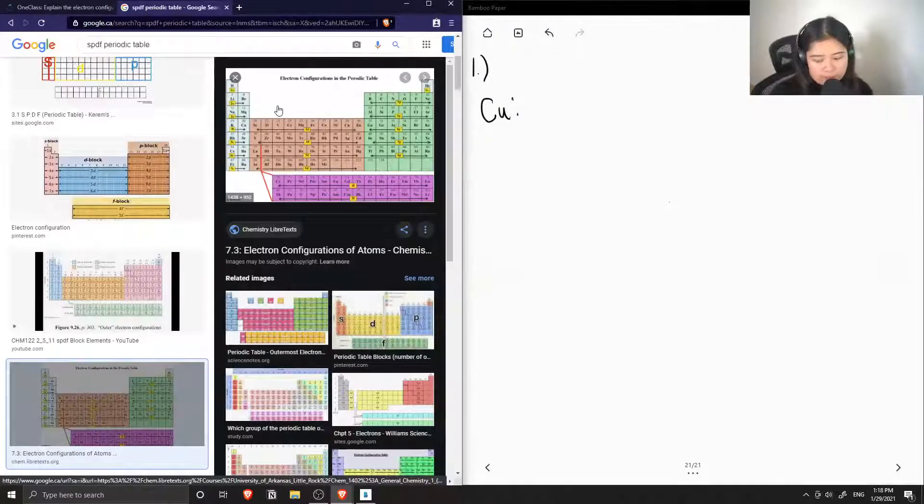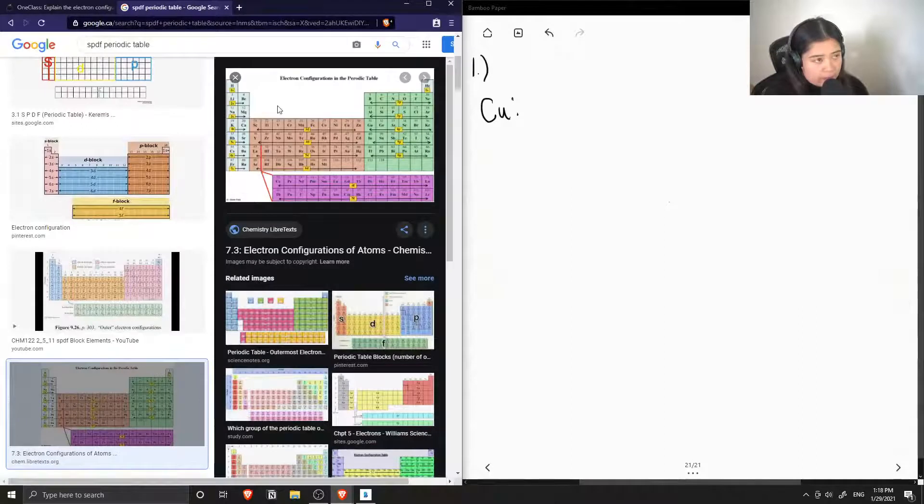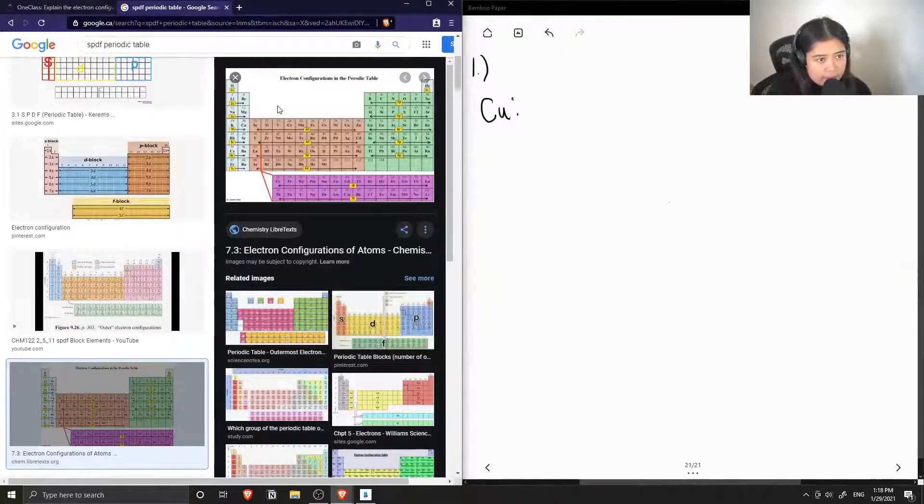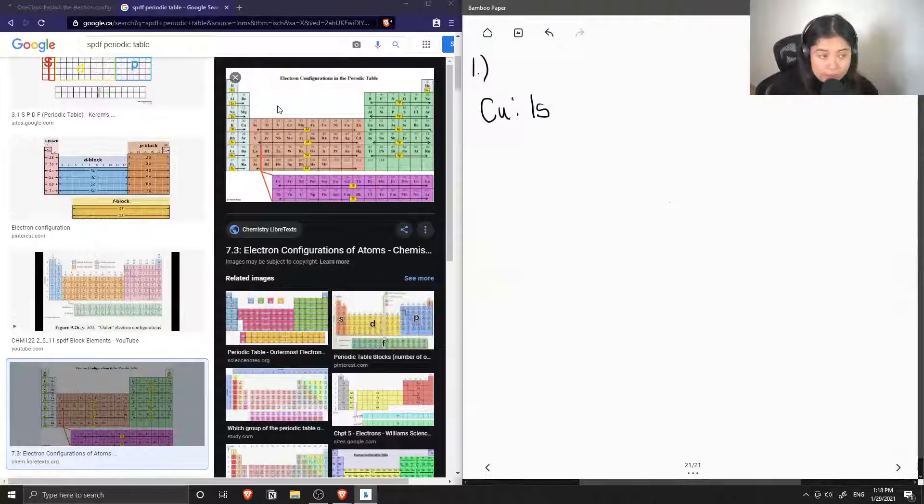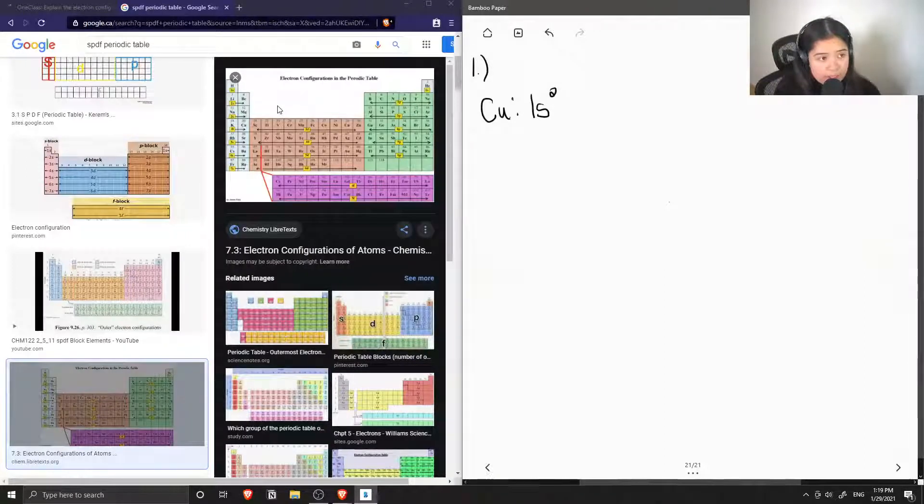So let's start off writing the electron configuration. Starting from hydrogen, we write the row number one, the block letter S, and then to show how many electrons are in this orbital, we use the superscript of two, since only two electrons can fit in the S orbital.